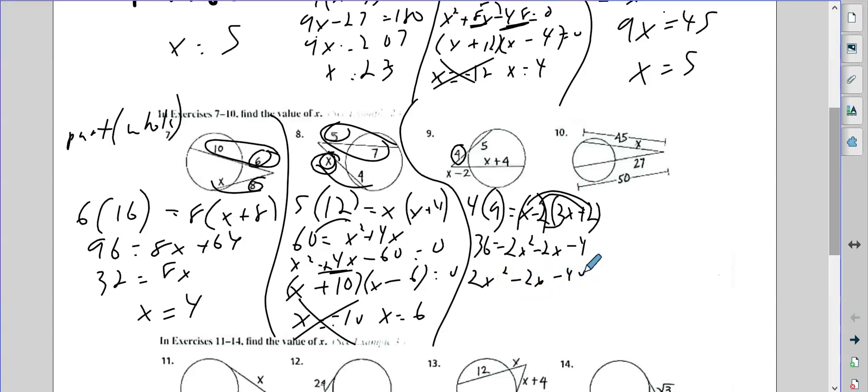Now to factor this, I'm going to take a 2 out first. Make it easier to factor. Now I need two numbers that multiply, give me 20 that differ by 1. Plus 5 and 4. I want more negatives than positives.